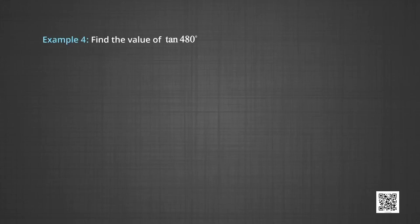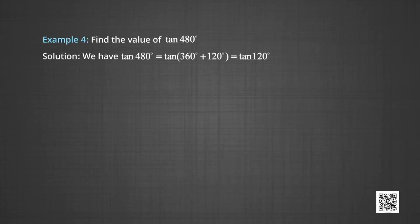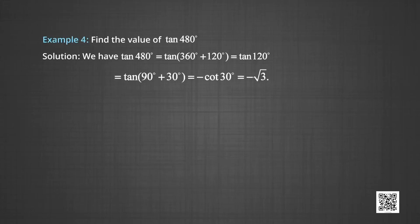In example 4, we find the value of tan(480°). tan(480°) = tan(360° + 120°) = tan(120°). Now 120° = 90° + 30°, so tan(120°) = tan(90° + 30°). Due to the 90° shift, tan changes to cot and we are in the second quadrant, so tan(90° + 30°) = −cot(30°) = −√3.